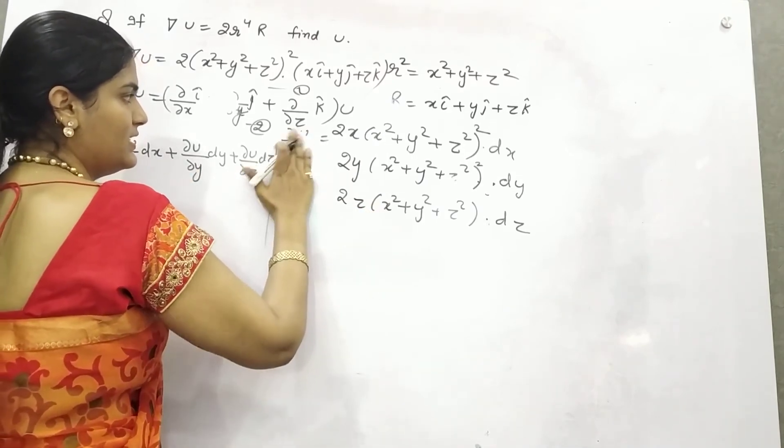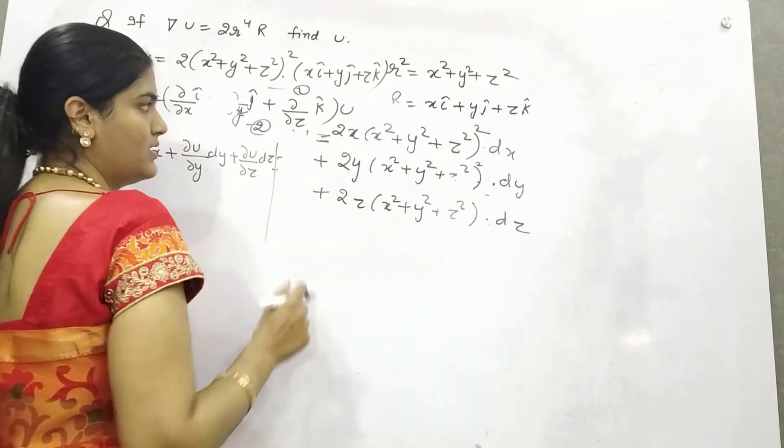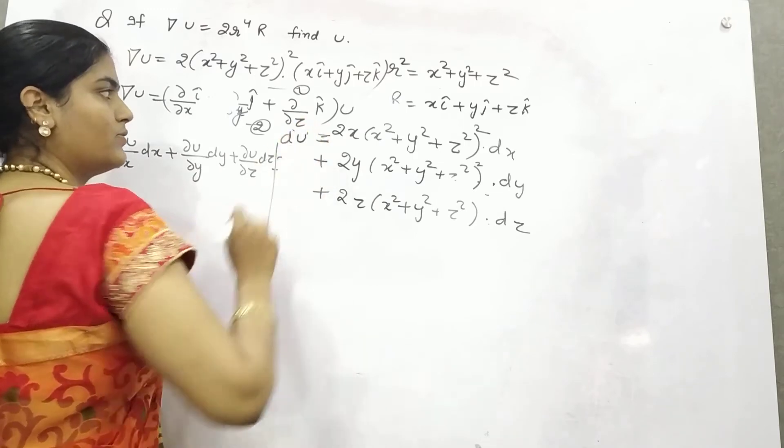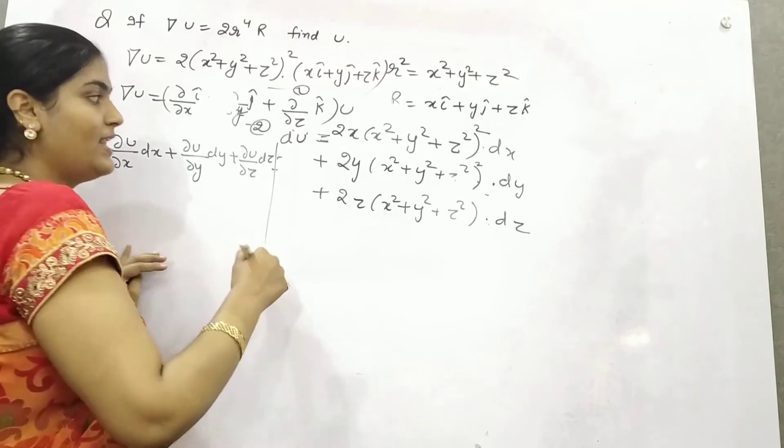This with dy and this with dz. If you add these three you will get du. So if you add these three, this plus this plus this is your du.